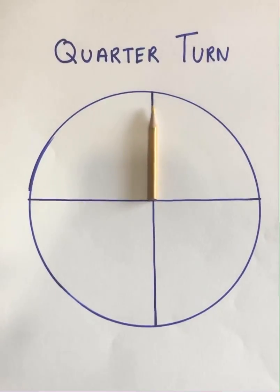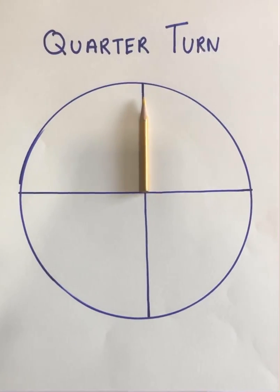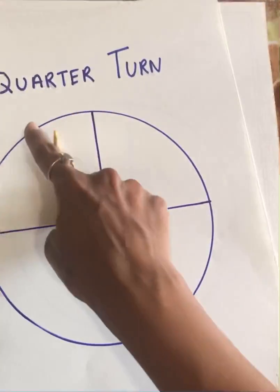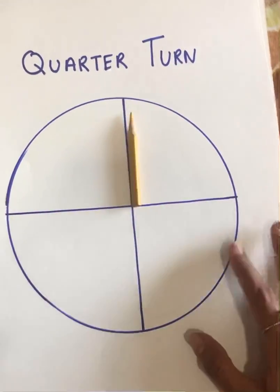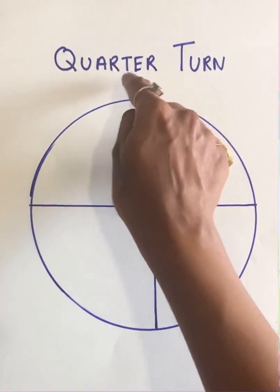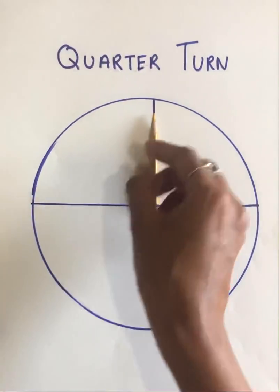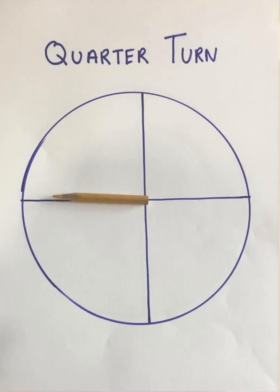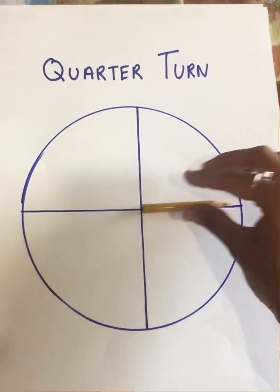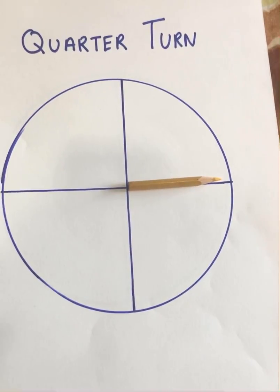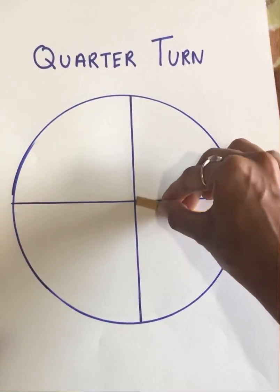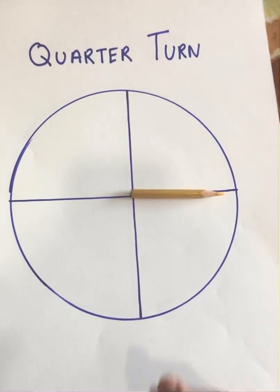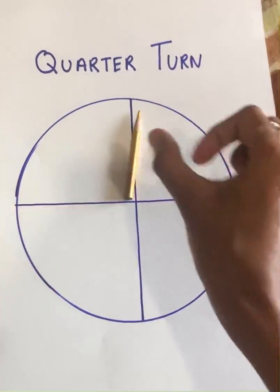If I tell you to turn it quarter turn anticlockwise, you need to first understand which direction to go. The question states anticlockwise, so we move in this direction and the quarter will come till here. So my quarter turn anticlockwise will stop over here. If I place my pencil this way and rotate it clockwise quarter turn, it continues moving this way. The anticlockwise quarter turn will go the other way and it will be back in the first position.